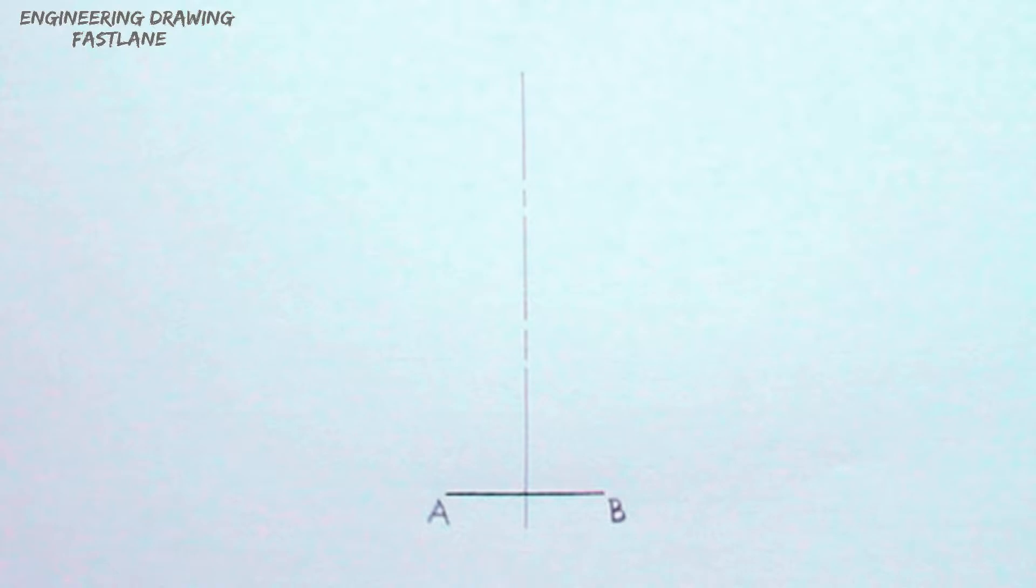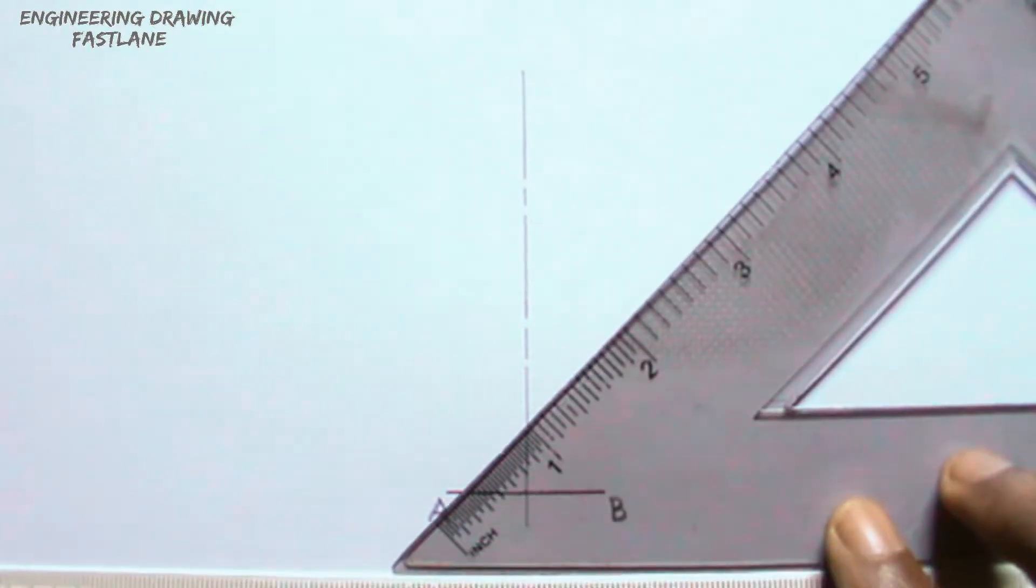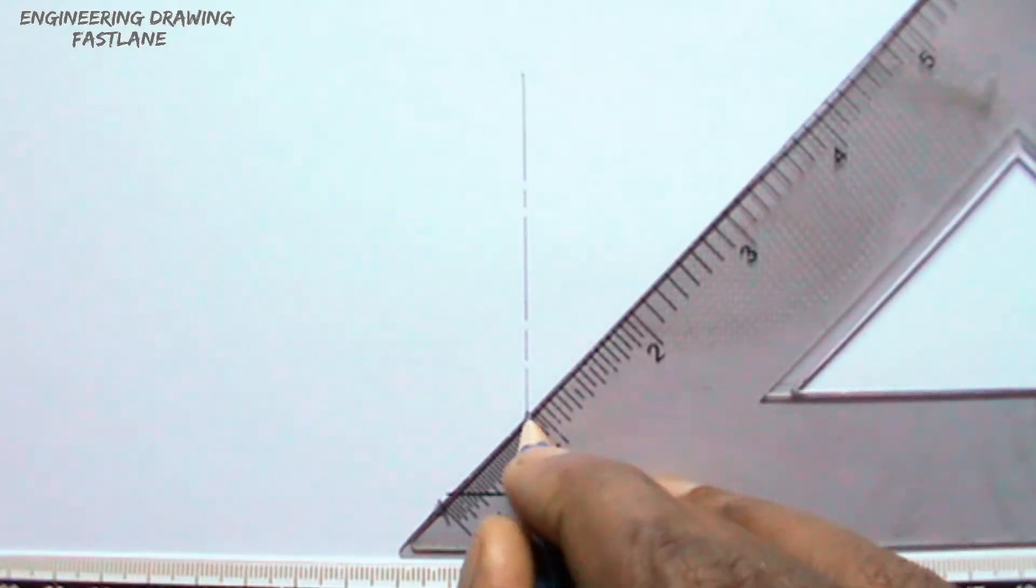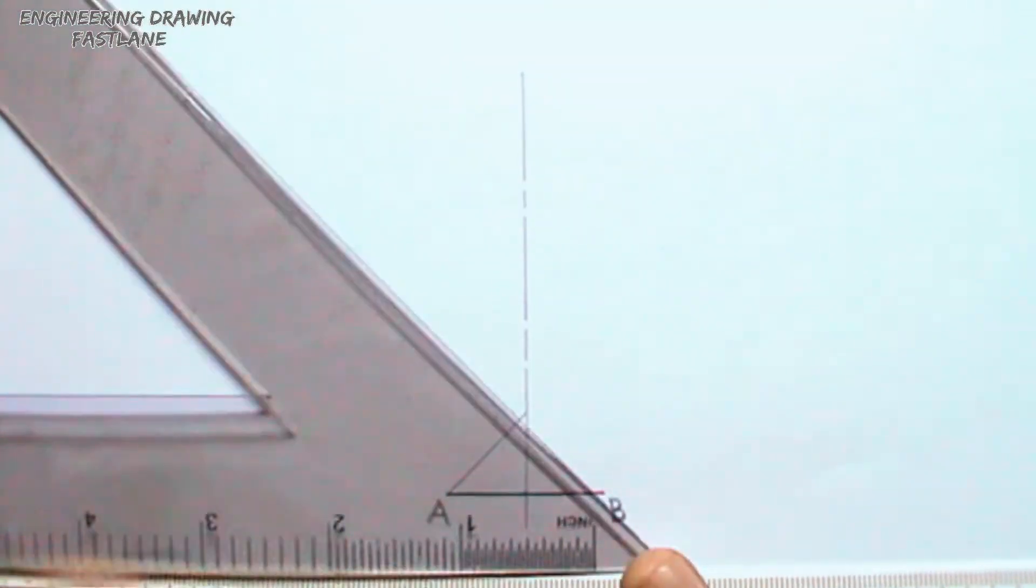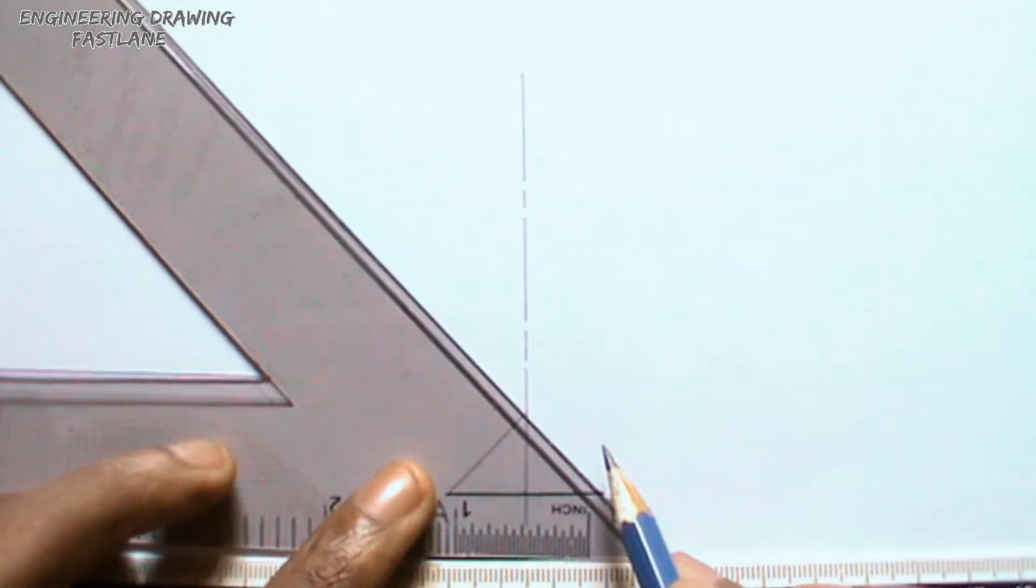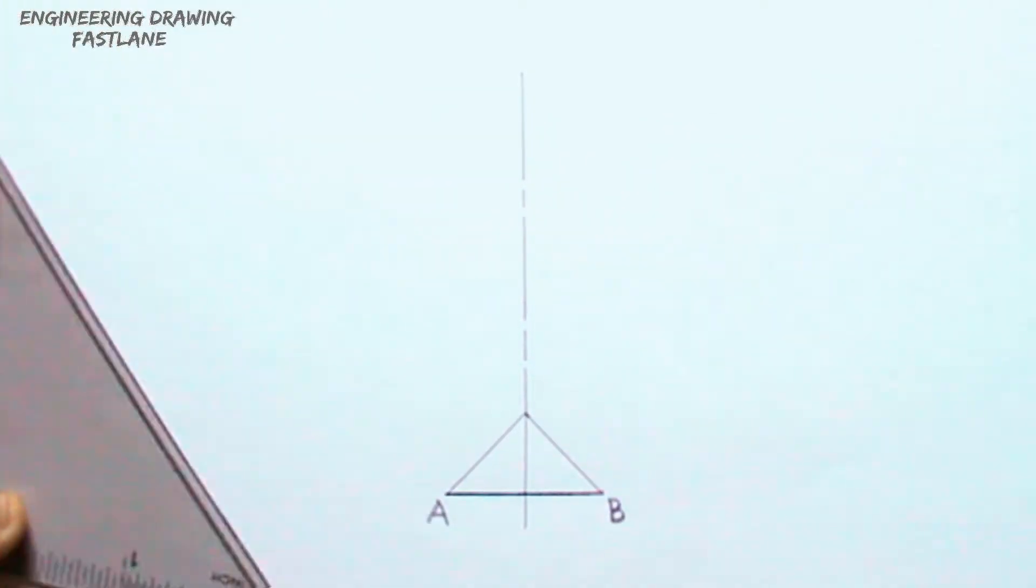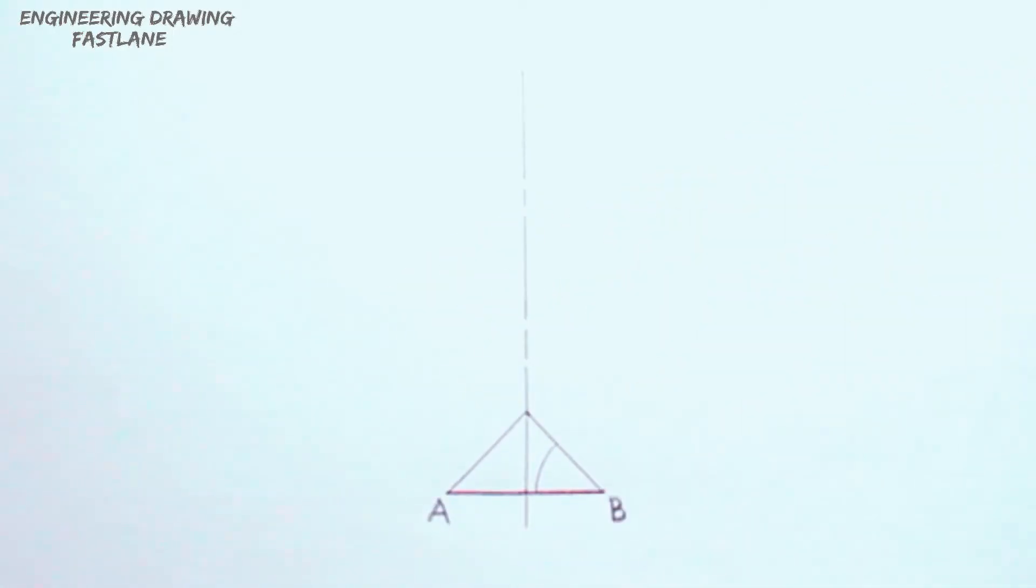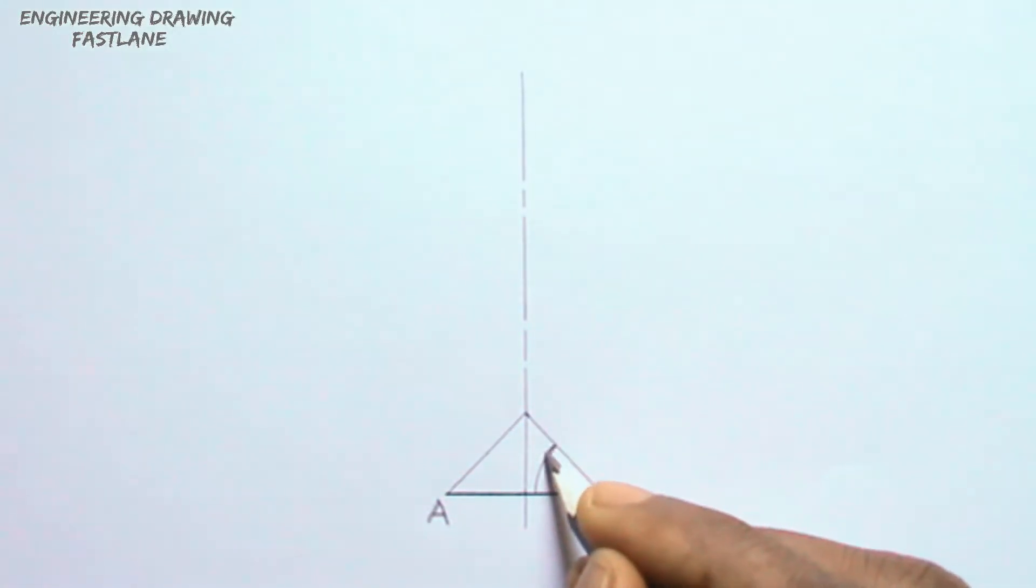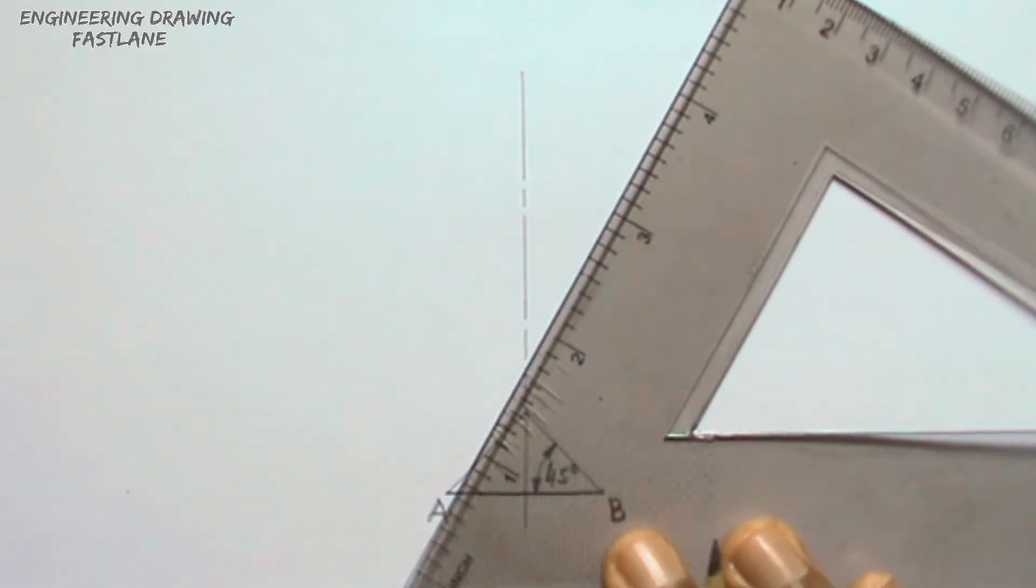Draw a triangle with base angle 45 degree on line AB. Draw another triangle with base angle 60 degree on line AB.